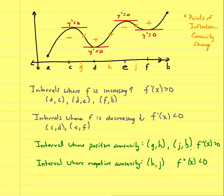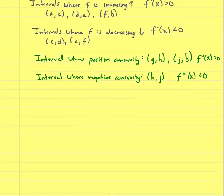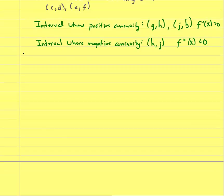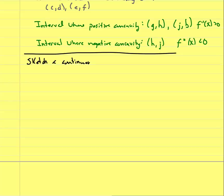To formally test where a function is increasing or decreasing, take the derivative, set it equal to zero, find critical numbers, test them in a slope chart, and also look where the derivative is undefined. Now, let's sketch a continuous graph — continuous means no gaps, no hollow points, no vertical asymptotes — over all real numbers satisfying the following conditions.